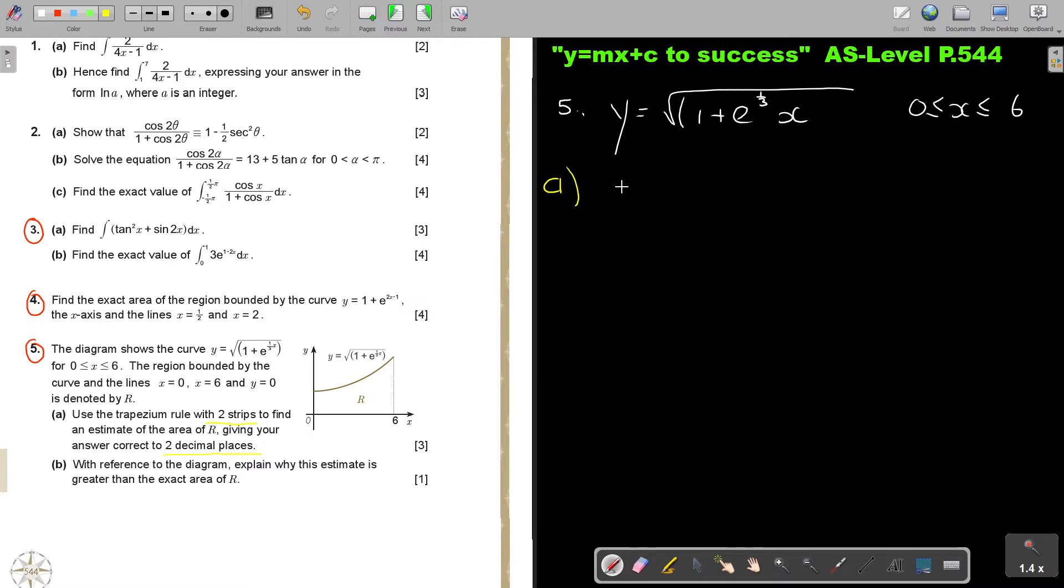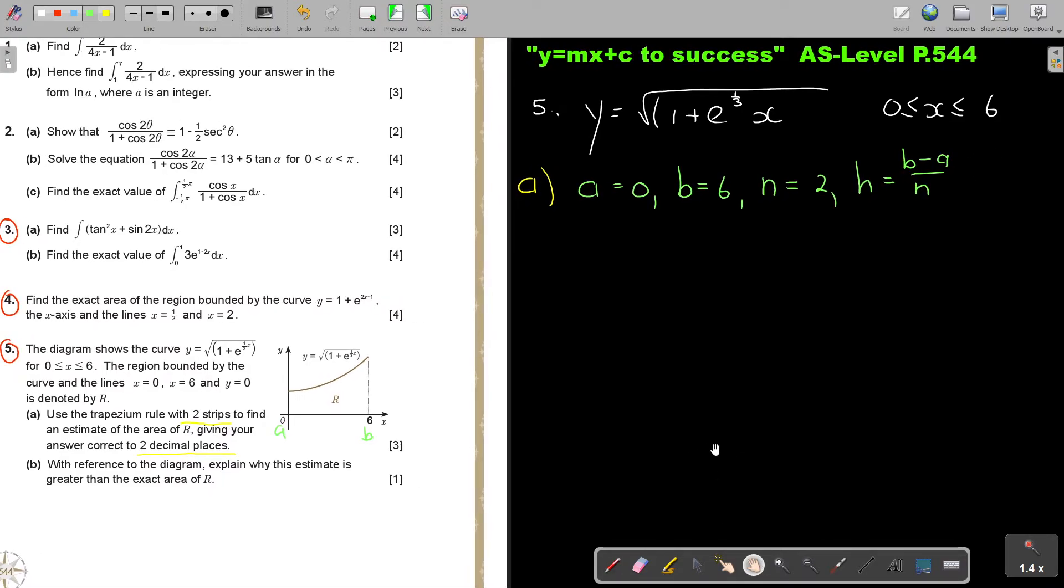Now, I'm first going to write down all my things. I'm going to say, what is the value of A? That's A, and that's B. So the value of A is 0. The value of B is 6. And the value of N, what is N going to be? 2. And the value of H is, this is going to be B minus A over N. So if I move it a little bit up, I'm going to say B. So 6 minus 0, divide 2, and that will be 3.